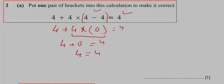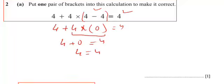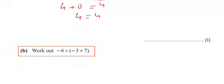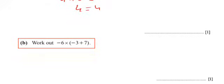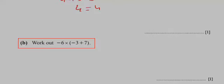Quite a good question. Now come to question 4B. In this question, we have to work out -6 × (-3 + 7).